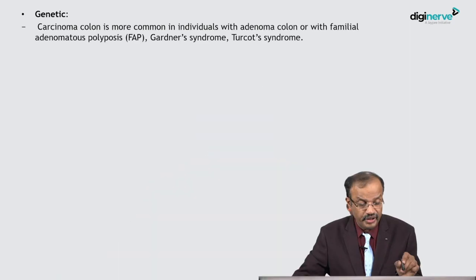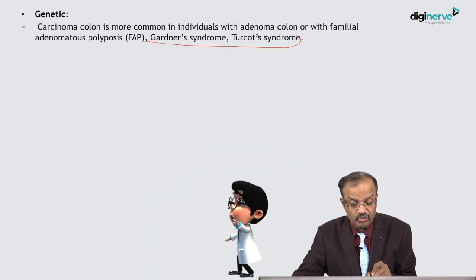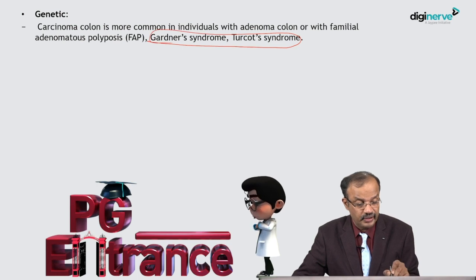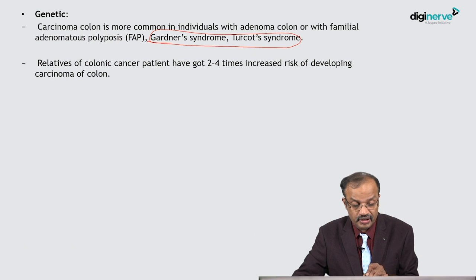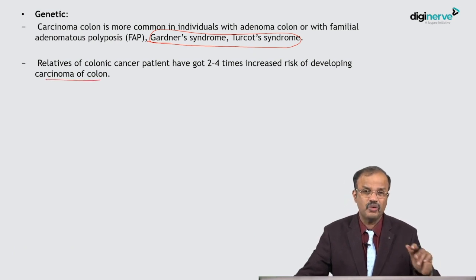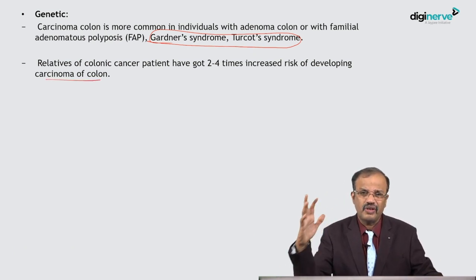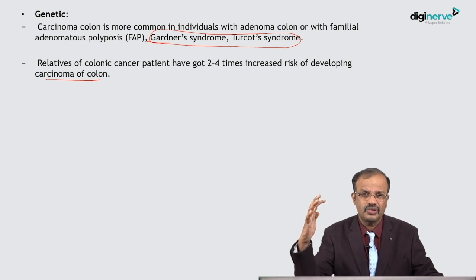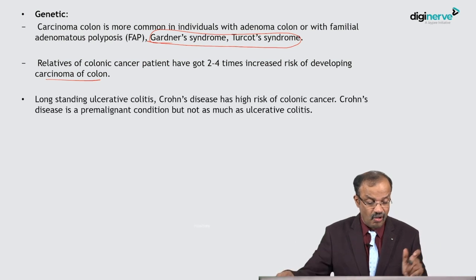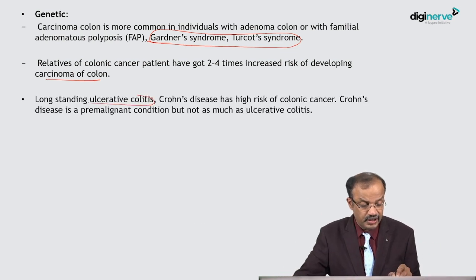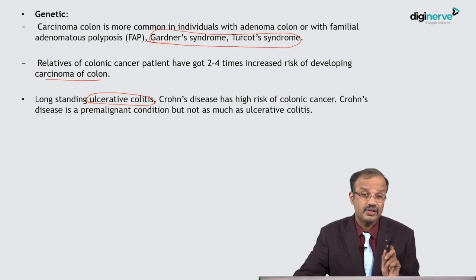Cholesterol-rich diet and red meat are high risk factors. Genetically, carcinoma colon is more common in individuals with adenoma of the colon, familial adenomatous polyposis, Gardner syndrome, and Turcot syndrome. A colonic cancer patient has a two to four times increased risk of developing carcinoma in the family. Colonic cancer runs in families — if your parents had carcinoma of the colon, you also have a high chance.